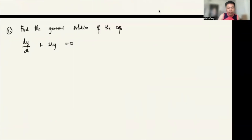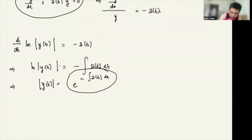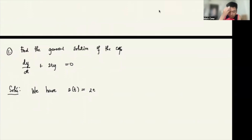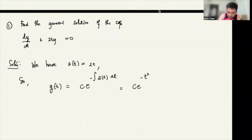Let's consider an example: find the general solution of the equation. Here a(t) = 2t, so using our general solution formula, y(t) = c·e^(−∫2t dt) = c·e^(−t²). This is our general solution.